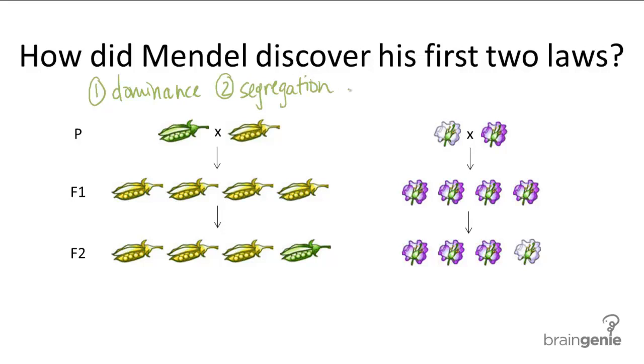While experimenting with his peas, Mendel discovered that lo and behold, when he crossed pea plants with different traits together, only one of the traits would show up in the offspring.